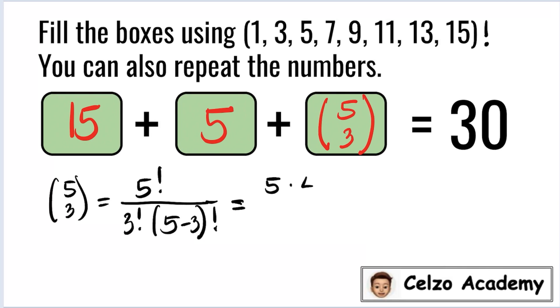5 factorial means 5 times 4 times 3 times 2 times 1 over 3 factorial means 3 times 2 times 1. And 5 minus 3 is 2, so we need to do 2 factorial, which means 2 times 1. Simplifying this, 1 divided by 1 is 1, 2 divided by 2 is 1, and 3 divided by 3 is also 1. So for the numerator, we have 5 times 4 is 20. For denominator, we have 2 times 1, which is 2. So the answer is 10.